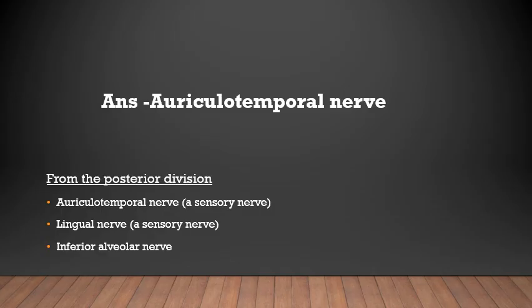Correct answer: auriculo-temporal nerve. Branches of the mandibular nerve that arise from the posterior division are: auriculo-temporal nerve, lingual nerve, and inferior alveolar nerve.